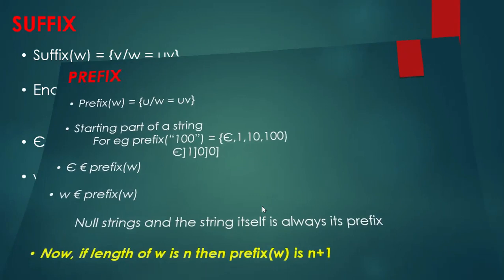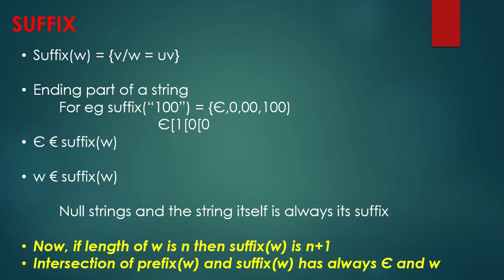Next, suffix. Suffix is exactly the same as prefix, except prefix is the starting portion and suffix is the ending portion of a string. For example, for string 100, the suffixes are: epsilon, 0, 00, and 100. Epsilon and the complete string also belong to the suffix of W. Null string and the string itself are always its suffixes. If the length of W is N, then the number of suffixes is also N plus 1, because of epsilon.